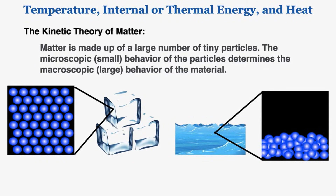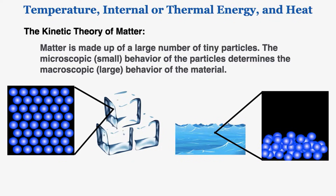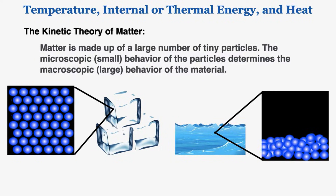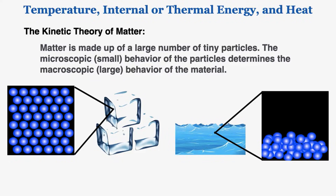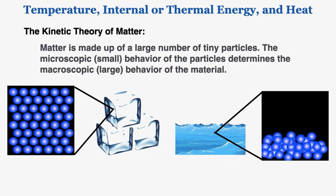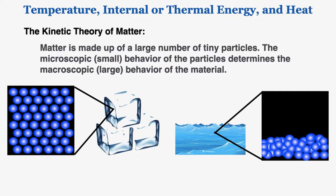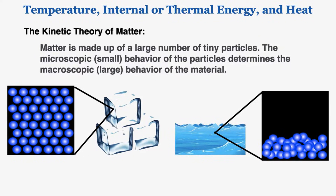If we were to zoom in, like I'm showing in the black boxes, and observe what the particles in each material are doing, we'd see something like this. In the ice, the particles are all kind of stuck together and shaking just a tiny little bit — they have just a little bit of motion as they move back and forth. The overall structure doesn't really change its shape. In the water, the particles are much more free to move around in random directions but still stay kind of close together, and they're moving a lot more.